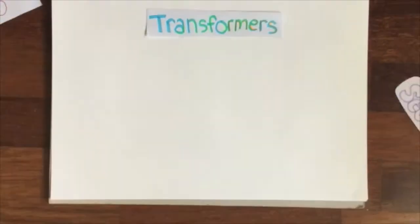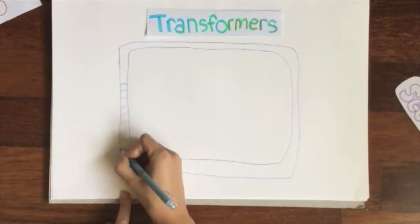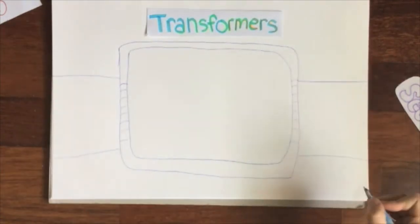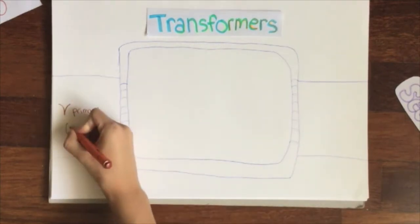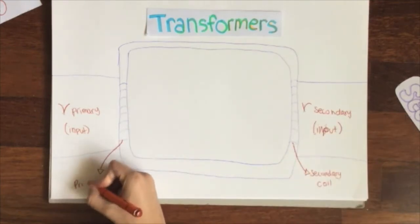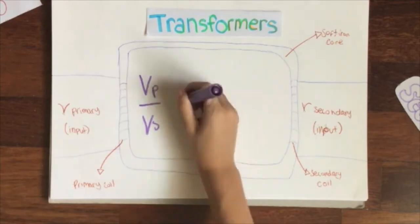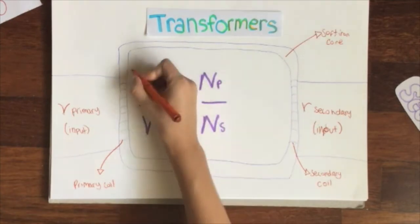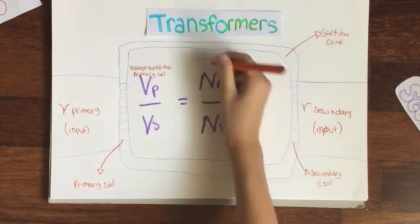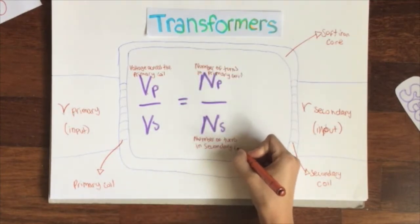Transformers increase or decrease the voltage in a circuit and vice versa with the current. This is done using electromagnets made from coils of wire and iron. We can calculate this by using this formula: primary voltage over secondary voltage equals primary turns over secondary turns.